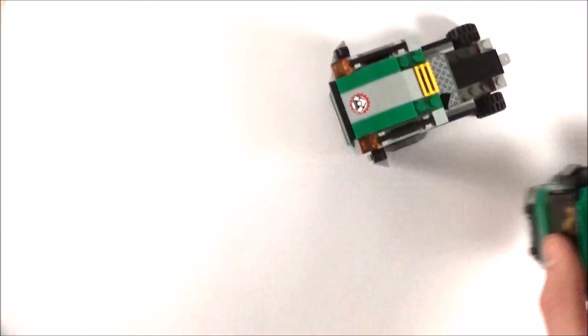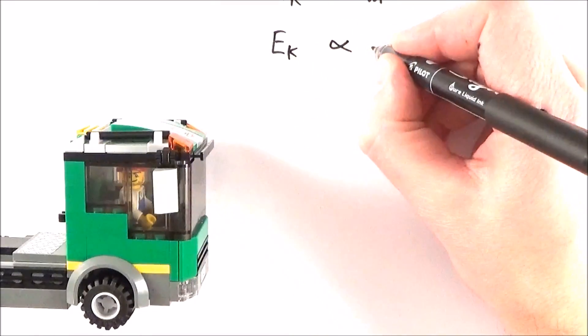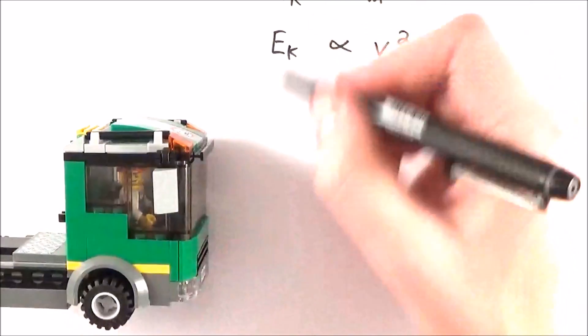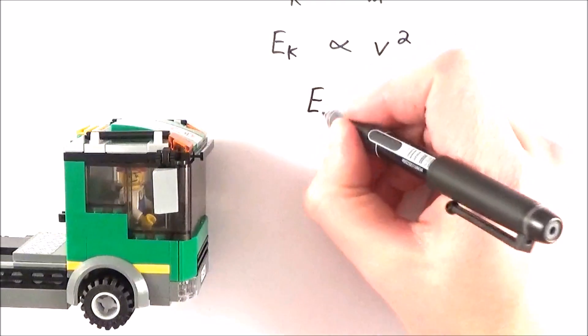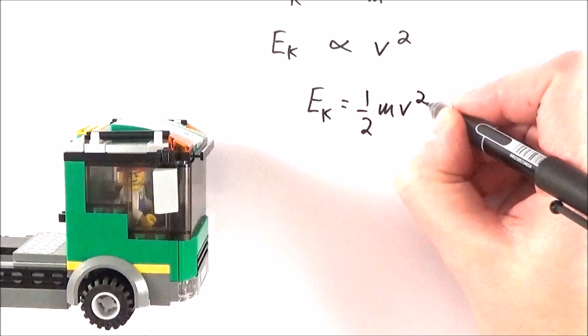When we consider the velocity of maybe two objects that have the same mass, that kinetic energy is going to be proportional or somehow related to the speed. But it's actually a squared relationship. And when we bring this all together we can say that the kinetic energy is equal to a half mv squared.